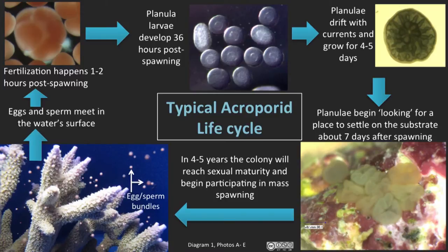On finding that habitat, the larvae develops into the primary polyp, which then undergoes asexual reproduction, dividing or cloning into a number of other polyps within the coral colony. And years later, as the colony grows and becomes mature, the cycle is repeated and egg and sperm bundles are released back into the water column during mass spawning.